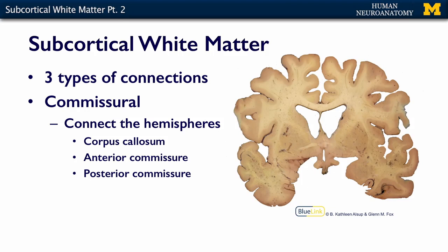The first one I want to talk about are the commissural fibers. The commissures connect the hemispheres. We can see the biggest one here, the corpus callosum, and it goes point to point to connect your right and your left hemispheres together.